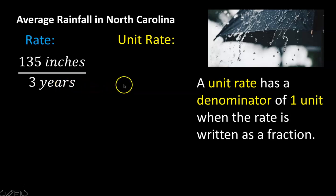Now let's talk about how to convert this to a unit rate. A unit rate has a denominator of one unit when the rate is written as a fraction. So for this to be written as a unit rate, the denominator would need to be one.